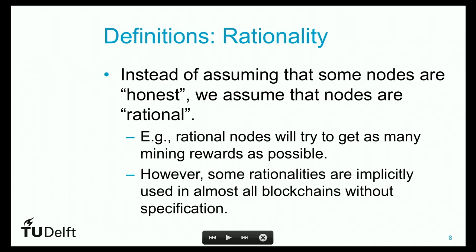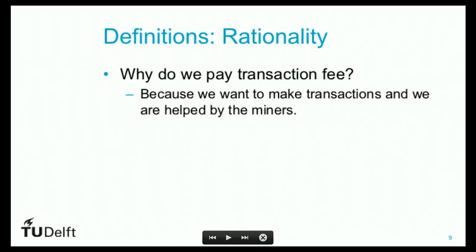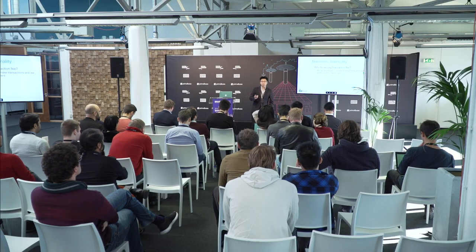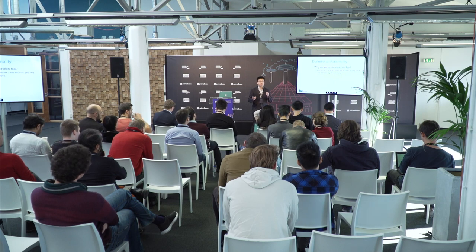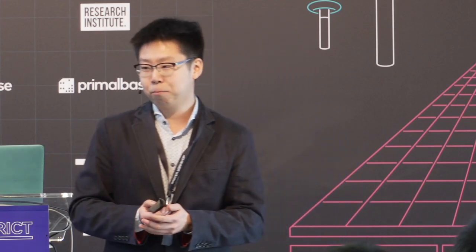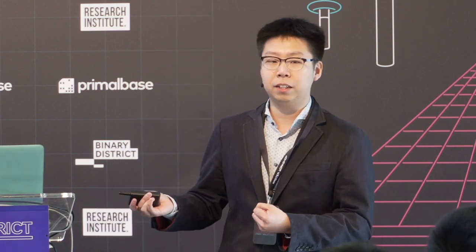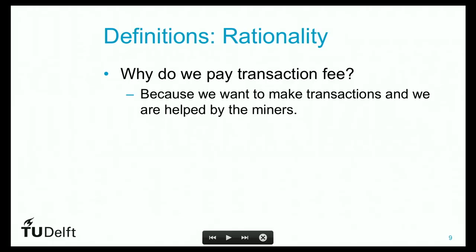There are certain other rationalities which have been overlooked in my opinion, although we are implicitly using them because we thought they were trivial. We are trying to point out those rationalities. One example: why do we pay a transaction fee in the first place? The clear answer is that we want to make a transaction. That's why we pay transaction fee to miners. We also pay transaction fee to Visa — when I make a transaction to David, I send money through Visa, and Visa provides the service of confirming my transaction. That's why we pay the transaction fee. If a miner is in place of Visa, it's natural that I need to pay the miner a transaction fee.